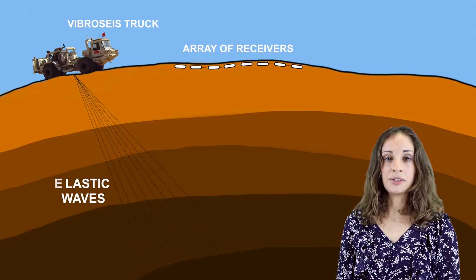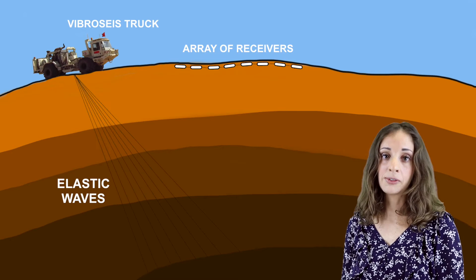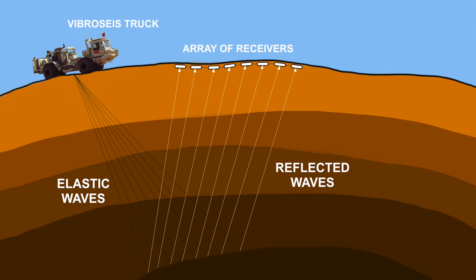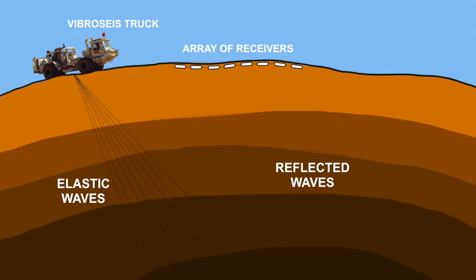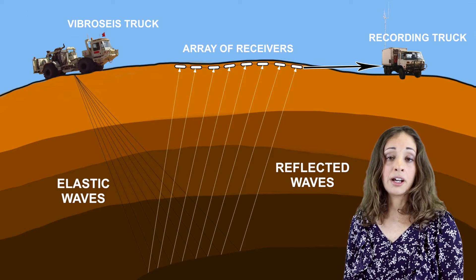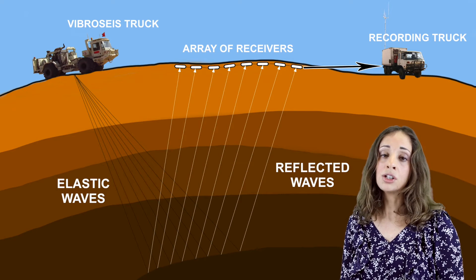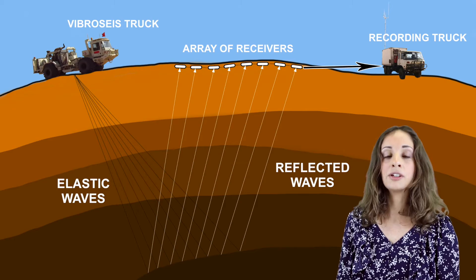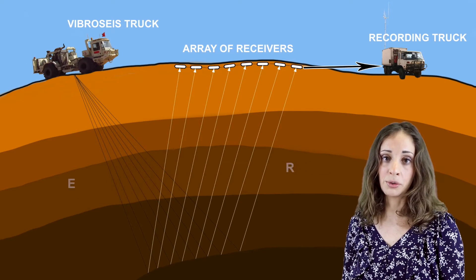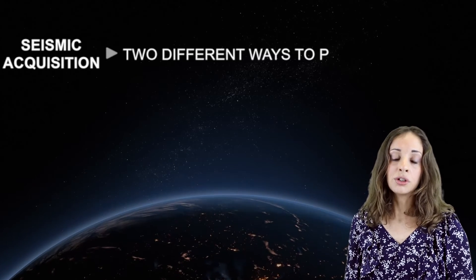Each discontinuity generates a reflected wave that reaches the surface and can be detected by an array of receivers. These receivers act as recorders of the travel time between the source and the receivers. All this data will be gathered and processed in order to get the final image of the subsurface.